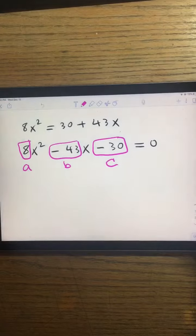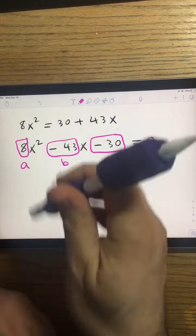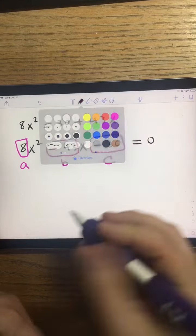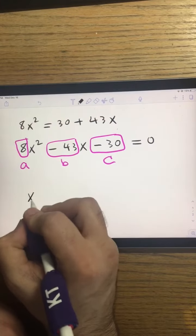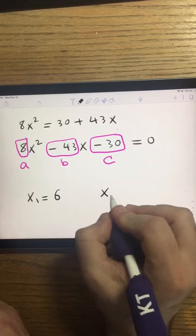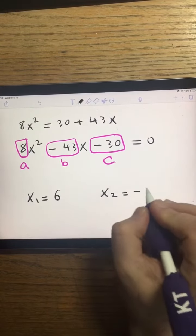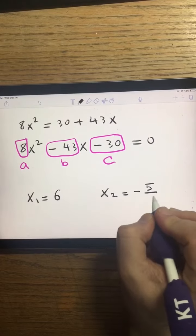So my answer for this problem is x₁ = 6 and x₂ = -5/8.